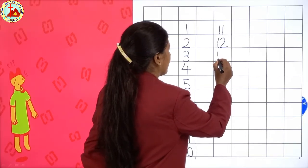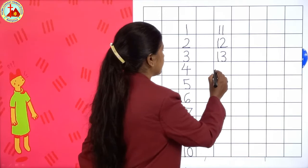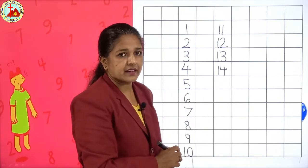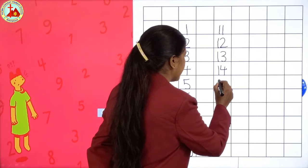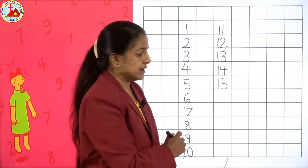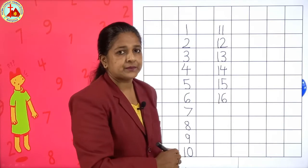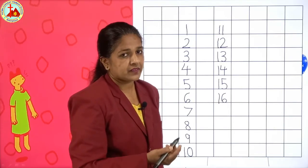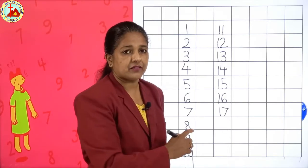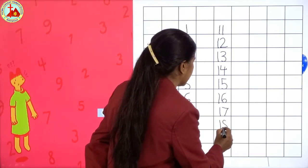Then 1-3, 13. After 13, 14: 1-4, 14. After 14, 15: 1-5, 15. After 15, 16: 1-6, 16. After 16, which number? Yes, 17: 1-7, 17. After 17, 18: 1-8, 18. Write slowly and neatly, children.